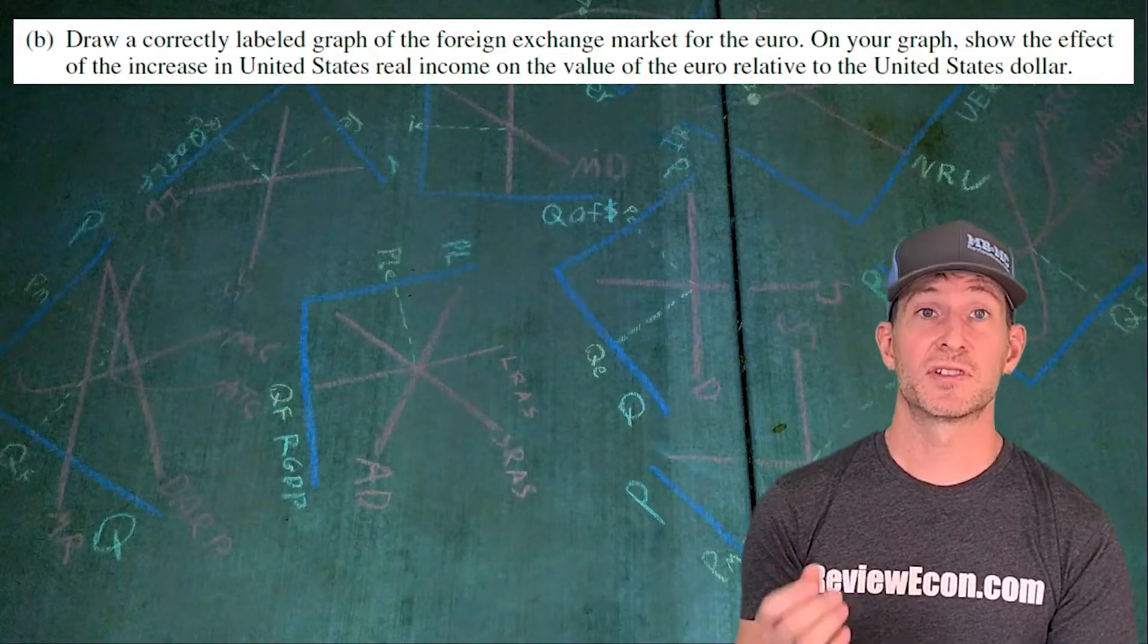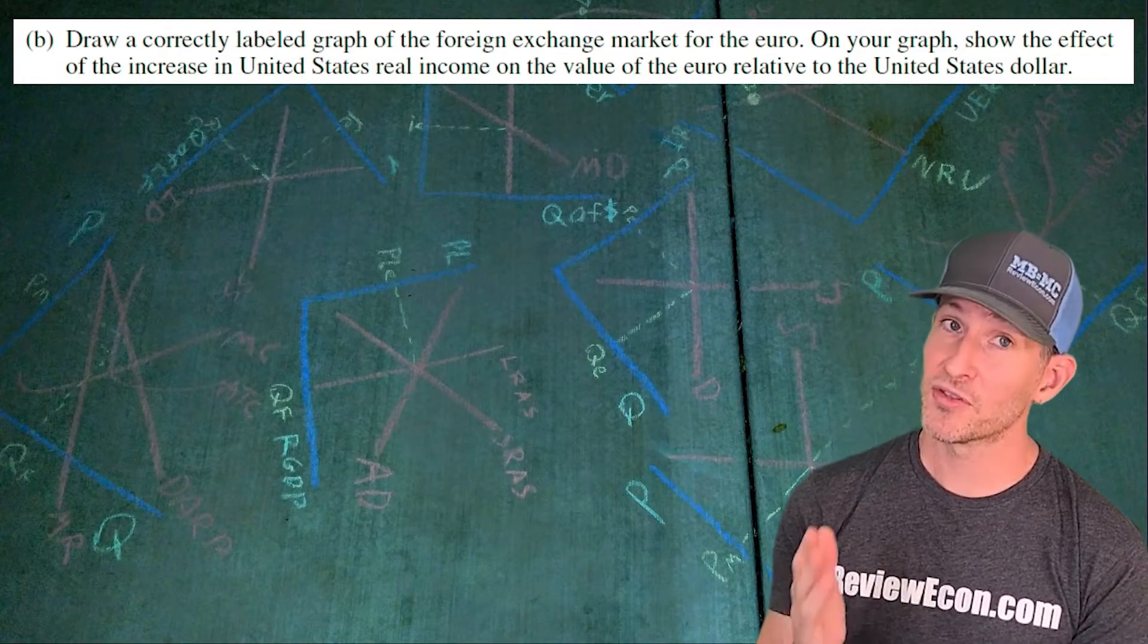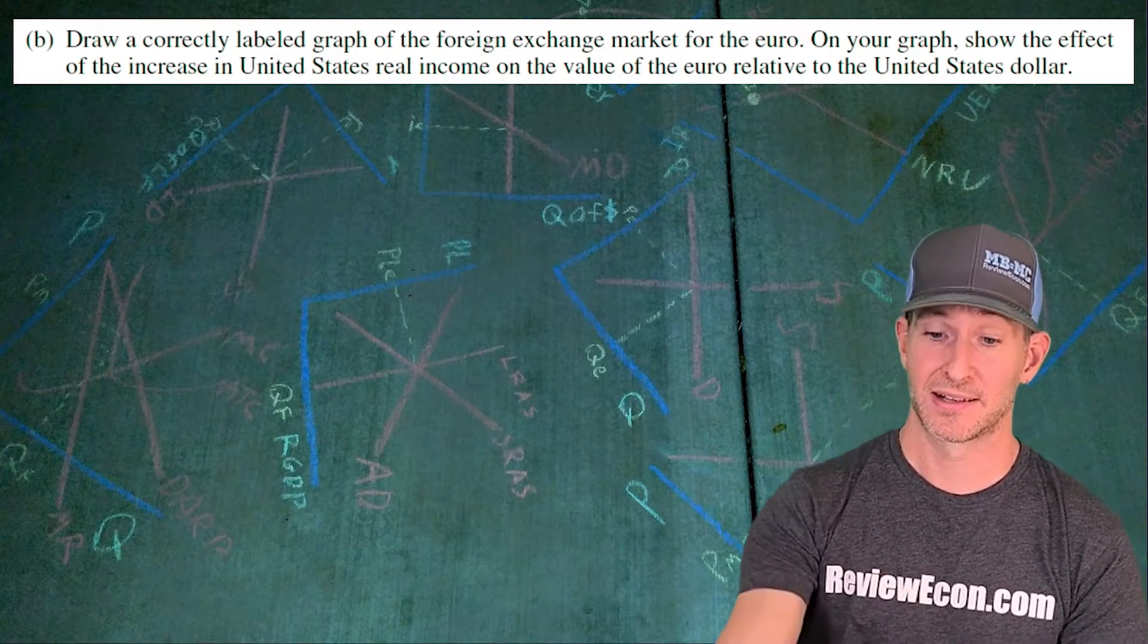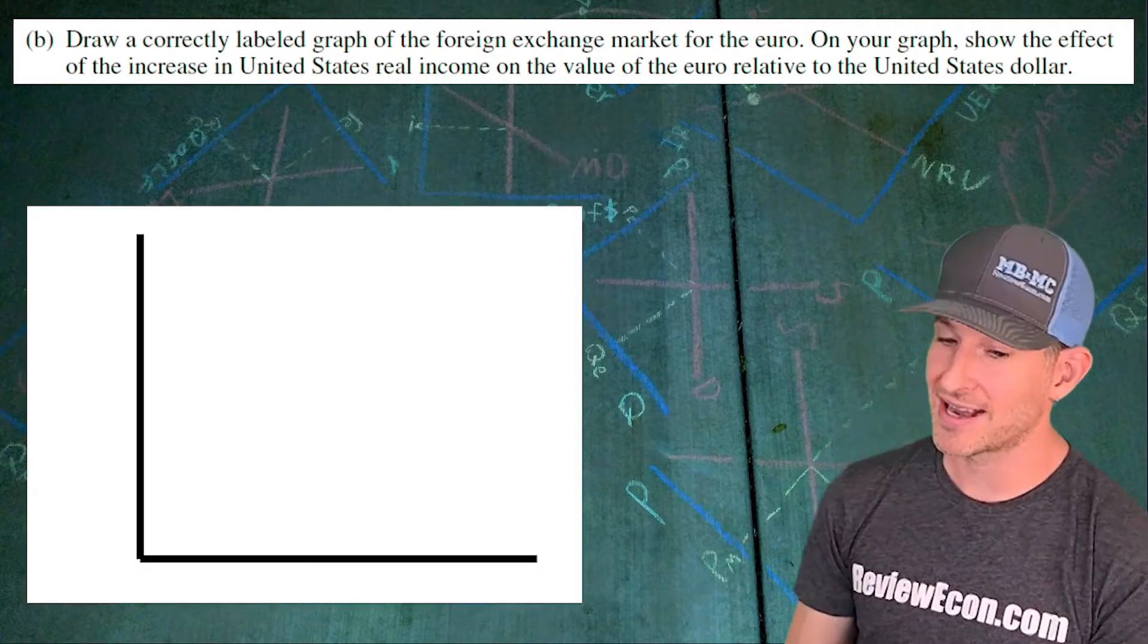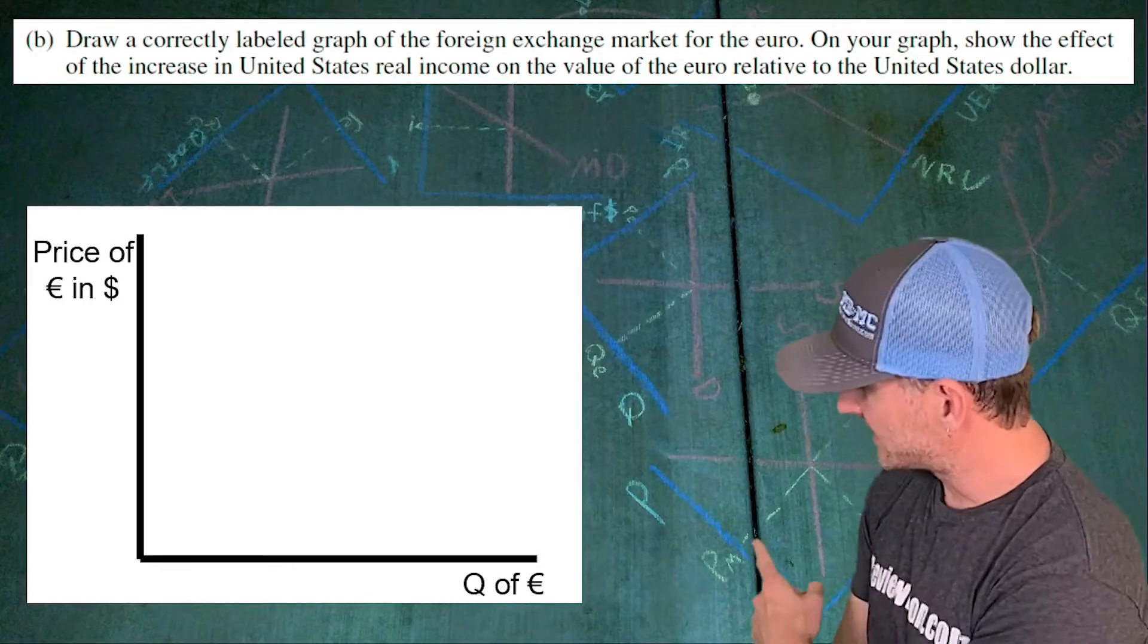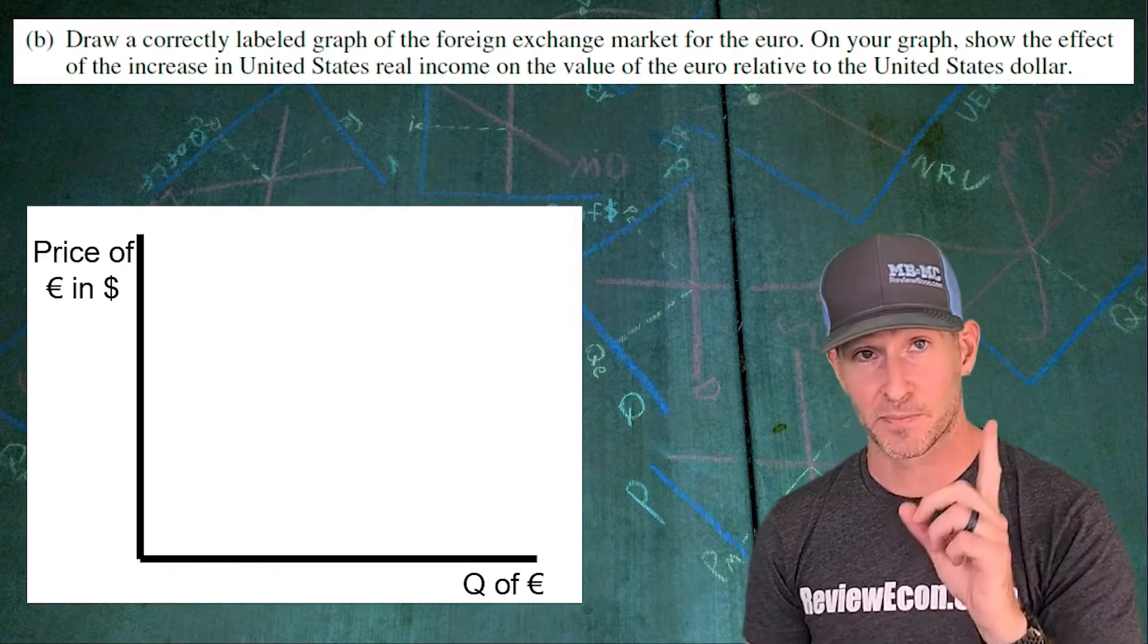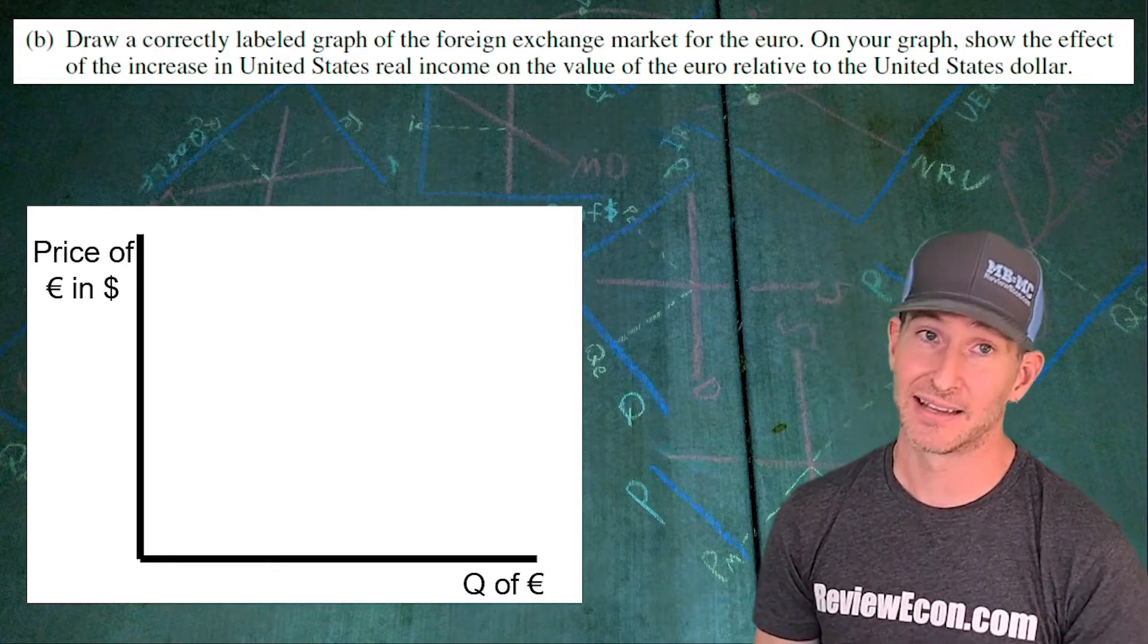The next thing we're going to do is draw a foreign exchange market for the euro and show the impact of that increase in real income in the United States. Let's start off by drawing out our axes and label that x-axis there as the quantity of euros and the y-axis as the price of euros in dollars.